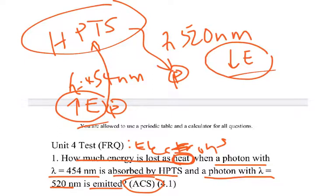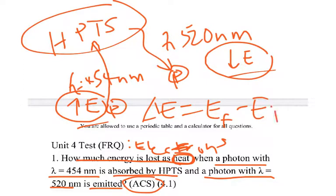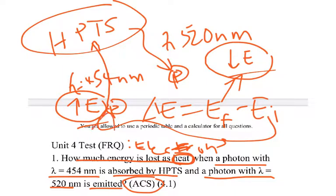We concluded that the change in energy — or you could call this heat — is equal to the energy after minus the initial energy, and this is for just one photon. So let's find the energy for each of these photons in order to find EF, the final energy, and EI, the initial energy of the photon.